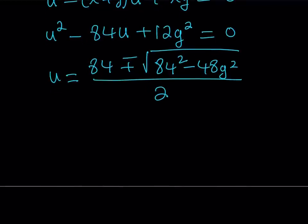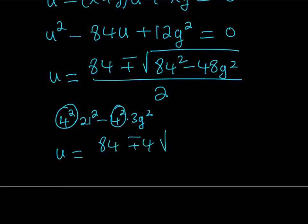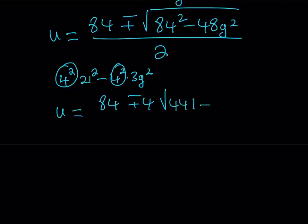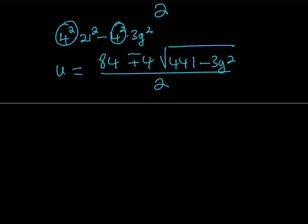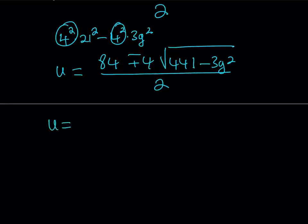In this case, I'm going to write 84 squared minus 4ac. a is 1, so it's going to be 4 times 12g squared, which is 48g squared, all over 2a, which is 2. I'd like to simplify what's inside the radical. 84 can be written as 4 times 21. So that is 4 squared times 21 squared. And 48 is 16 times 4, so it's 4 squared times 3g squared. So 4 squared can be taken out. When you square root 4 squared, it becomes 4.